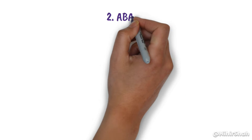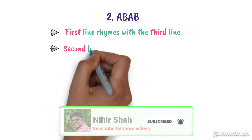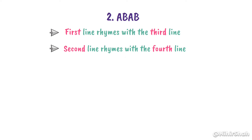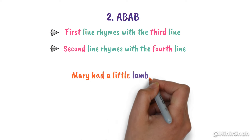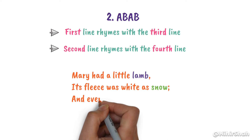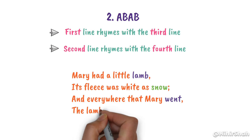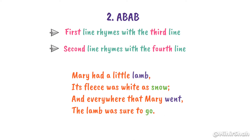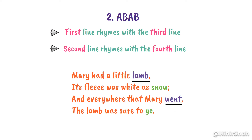Number 2, A-B-A-B. Here, the 1st line rhymes with the 3rd line, and the 2nd line rhymes with the 4th line. For example: 'Mary had a little lamb, its fleece was white as snow. And everywhere that Mary went, the lamb was sure to go.' In this example, 'lamb' rhymes with 'went', so line 1 rhymes with line 3. And 'snow' rhymes with 'go', so line 2 rhymes with line 4. So it's A-B-A-B.